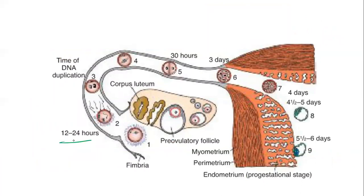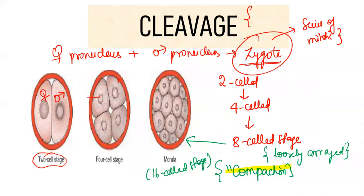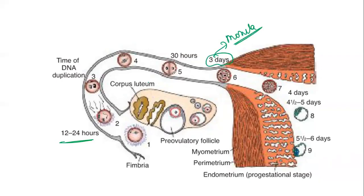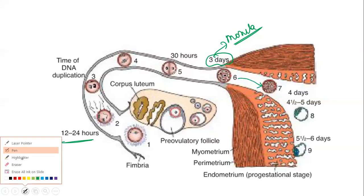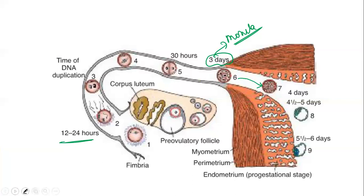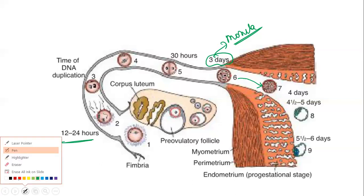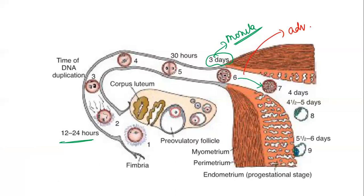Fertilization happens within 12 to 24 hours. The fertilized zygote undergoes cleavage, and approximately by three days from fertilization, the morula is formed — an important MCQ point. This morula forms in the ampulla and slowly moves toward the uterine cavity. The 16-cell morula then undergoes one more division to form the 32-cell advanced morula stage before entering the uterus.